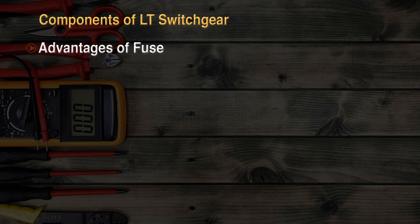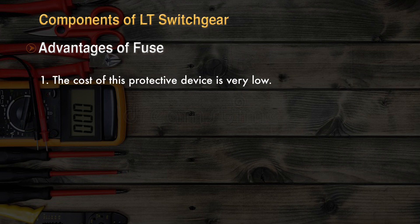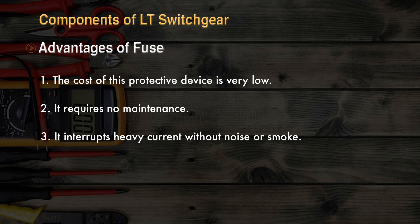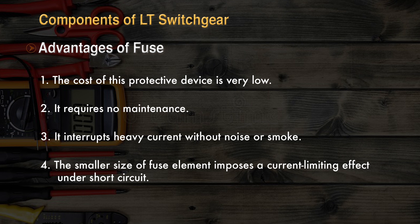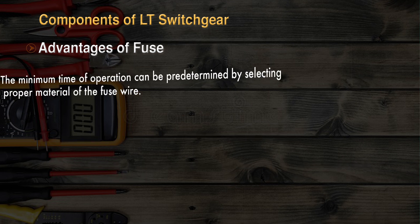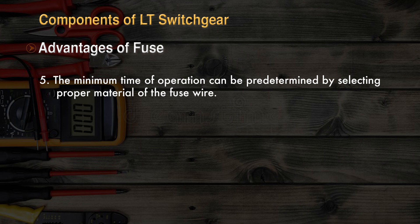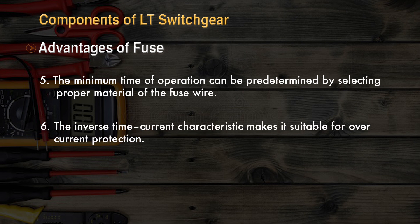The advantages of a fuse are: the cost of this protective device is very low; it requires no maintenance and interrupts heavy current without noise or smoke; the smaller size of the fuse element imposes a current-limiting effect under short circuit; the minimum time of operation can be predetermined by selecting proper material of the fuse wire; and the inverse time-current characteristic makes it suitable for overcurrent protection.